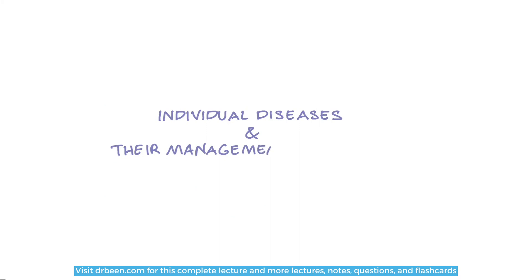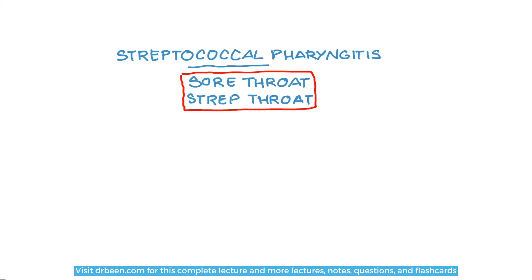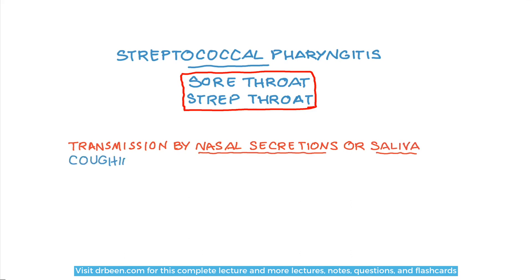Now that we understand the categories of diseases, let's look at each disease one by one and see how to approach their management. The first disease to discuss is streptococcal pharyngitis, or sore throat, or strep throat. Strep throat alone causes up to 7 million medical visits in the US on a yearly basis. The pathogen is transmitted from person to person either through nasal secretions or saliva.